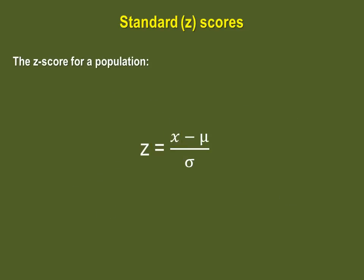And here is the formula when we are looking for z-score in a population. The only difference here is in the symbology, indicating that we are using the population mean and the population standard deviation. As such, we can also say that the z-score tells us how many standard deviations away from the mean each value in our distribution is.